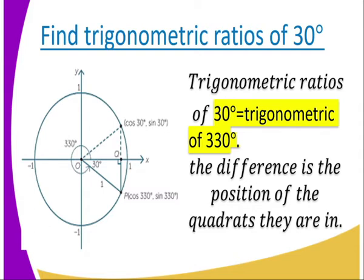In which quadrant is negative 30 degrees? When the angle is positive, it falls in the first quadrant. When it is negative, you find it in the fourth quadrant. So because it is in the fourth quadrant, you are going to apply the properties of the fourth quadrant.